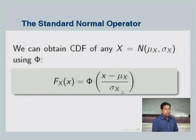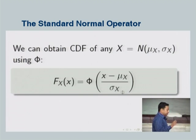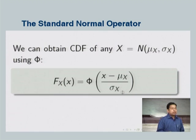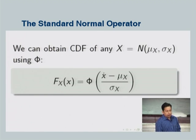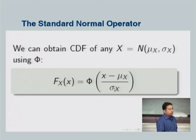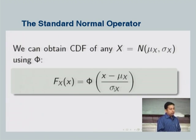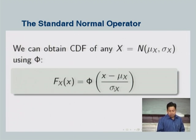If you have standard normal tables and need to find the CDF of a normal random variable with mean equal to 3 and standard deviation equal to 0.2, say at x equal to 5, you compute (5 minus 3) divided by 0.2 to get the standard form value, then look up phi at that value in the table — a very simple task.